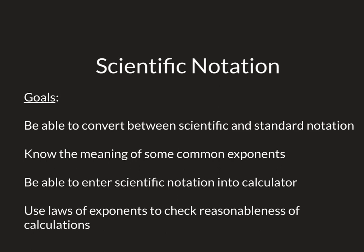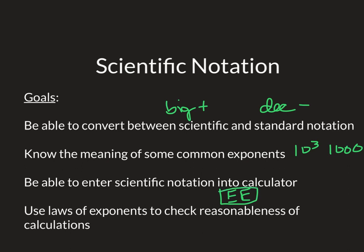So here's what we went over today: converting between scientific and standard notation, where scientific notation has one number and a decimal point then the rest of the number. Big numbers have positive exponents; decimal numbers have negative exponents. Common exponents like 10 to the 3rd is 1,000, 10 to the 2nd is 100, 10 to the 6th is 1,000,000. We used the EE button to enter scientific notation into the calculator. And we used our laws of exponents to check reasonableness — when you multiply, add the exponents; when you divide, subtract the exponents. That is a review of scientific notation, and you'll practice it on your metric conversion worksheet.